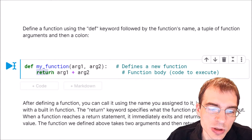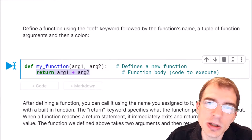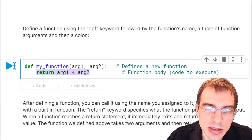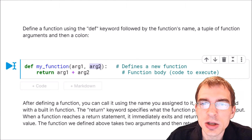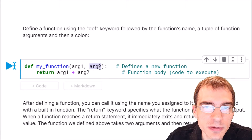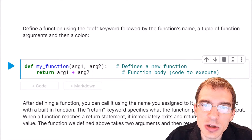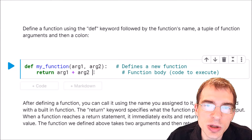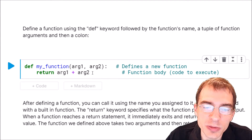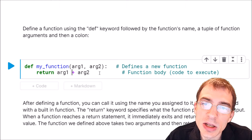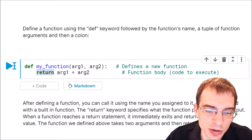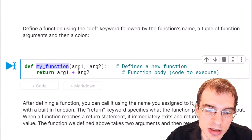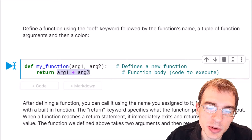Within the code body you can put all sorts of different control flow statements and calculations, but ultimately the purpose of a function is to take some input values — in this case arg1 and arg2 — and to produce either some result or some output. If you are producing output from a function you want to return those output values using the return keyword. So here in this function we're just going to return the sum of the two arguments: arg1 plus arg2.